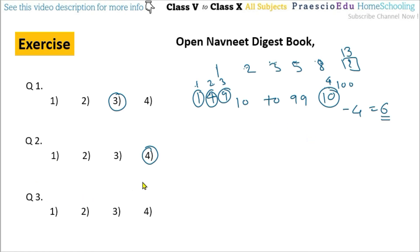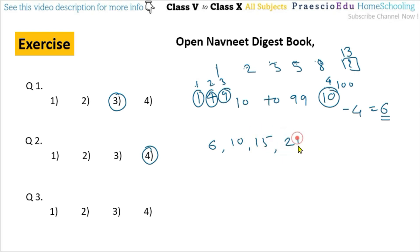Question number 3: how many triangular numbers are there in the given list? 6 is a triangular number, 9 is not, 10 is, 12 is not, 15 is, 21 is, and 36 is. So there are 5 triangular numbers in total, and 5 is given in option number 1. Option number 1 is the correct answer.